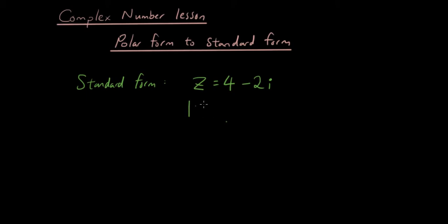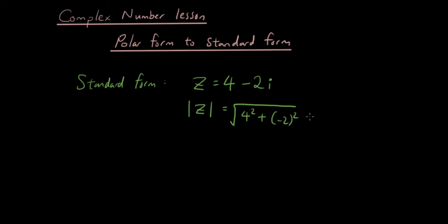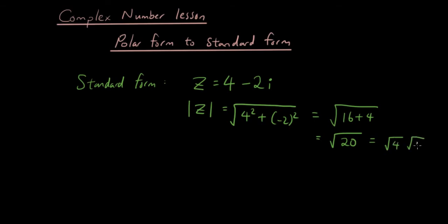So what I do is find the square root of 4 squared plus negative 2 squared. That's the square root of 16 plus 4, which is the square root of 20. And if you know your surds, you can simplify this into square root of 4 times the square root of 5, which is 2 square root of 5.